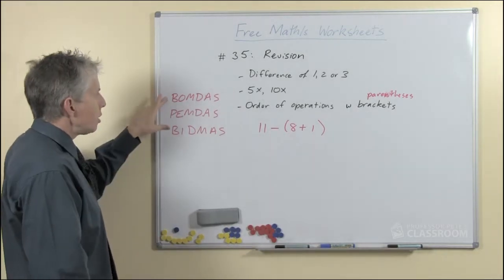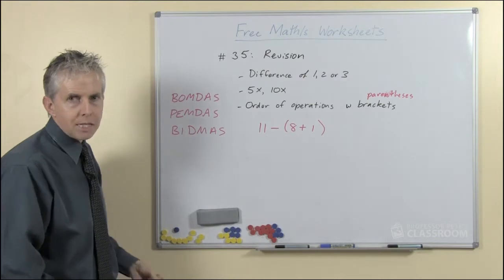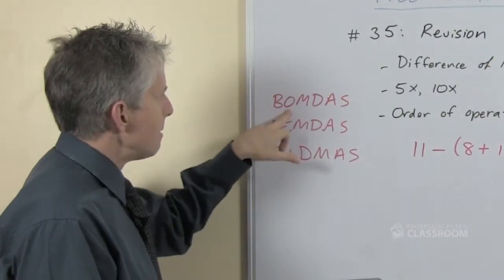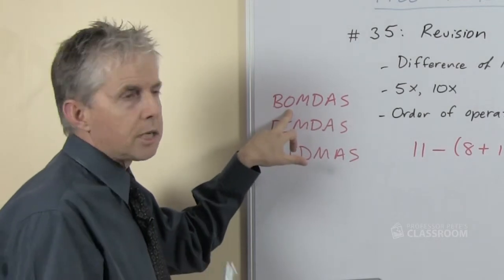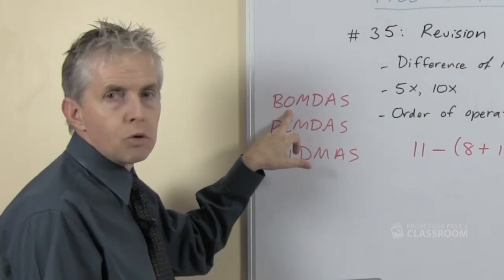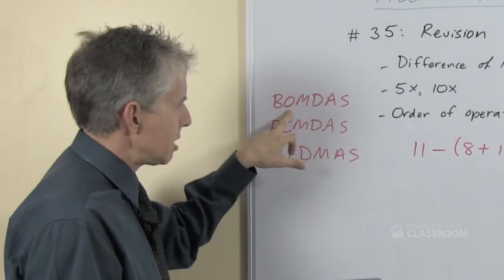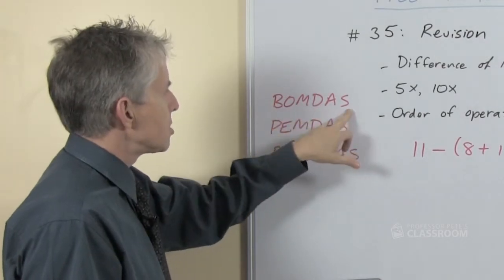So in Australia we commonly use one called BOMDAS which stands for brackets. The O can stand for all sorts of things, orders or of, multiplying, dividing, adding and subtracting.